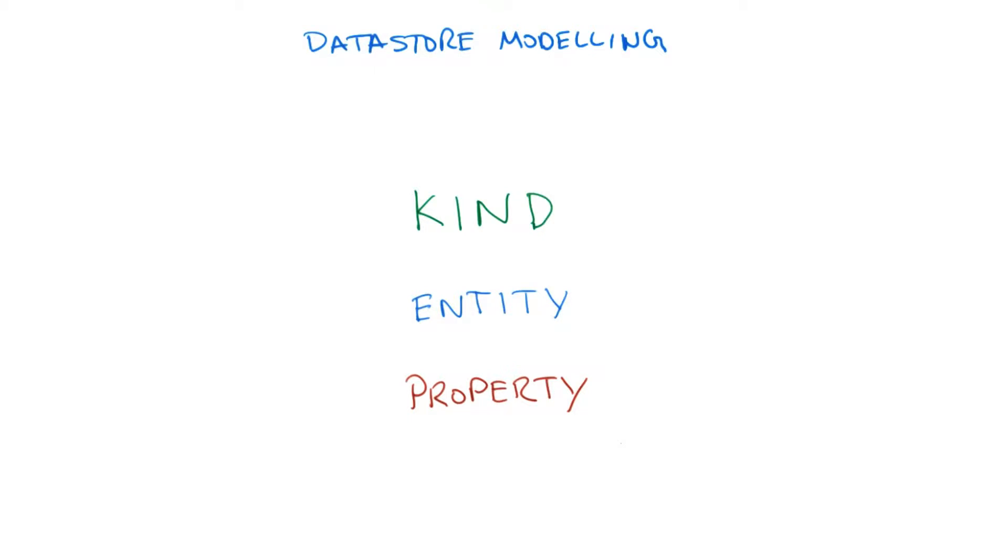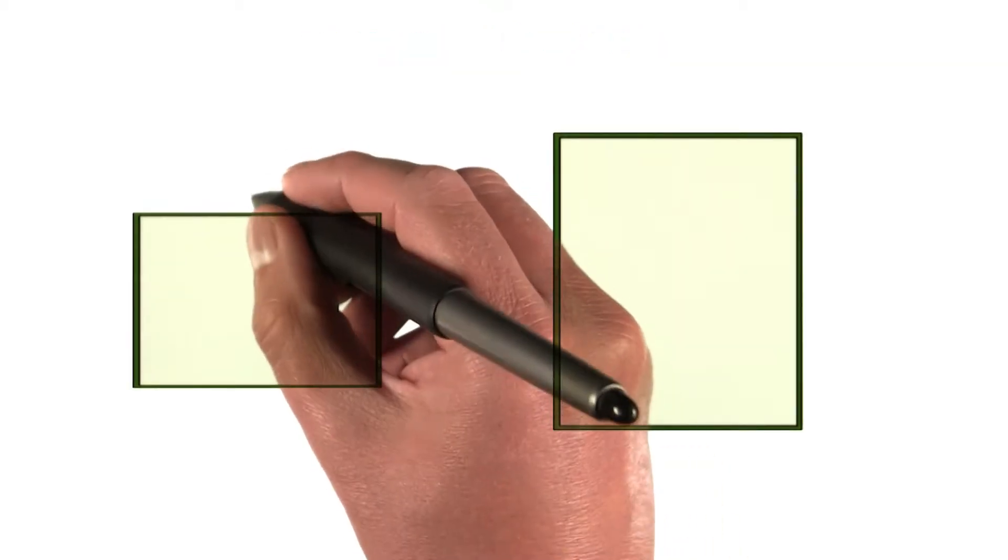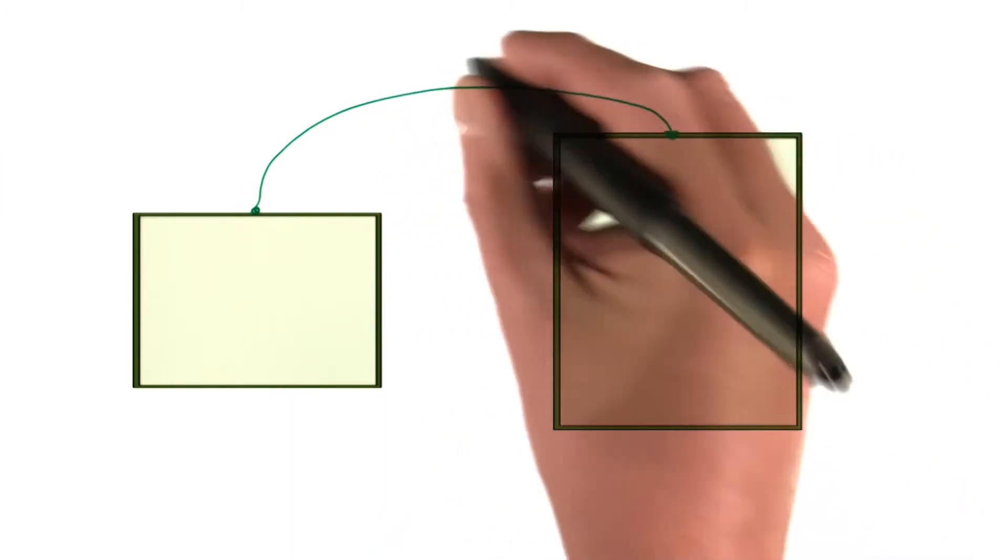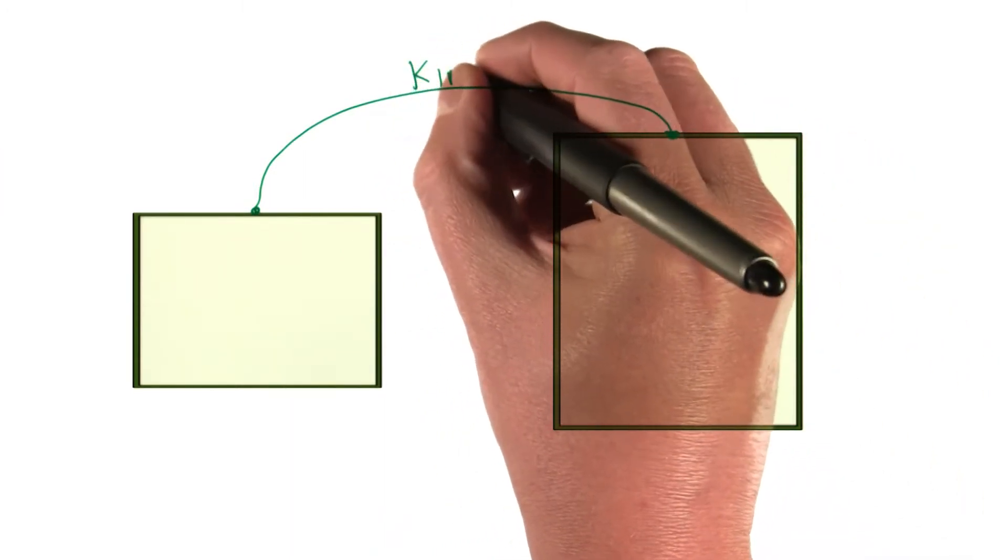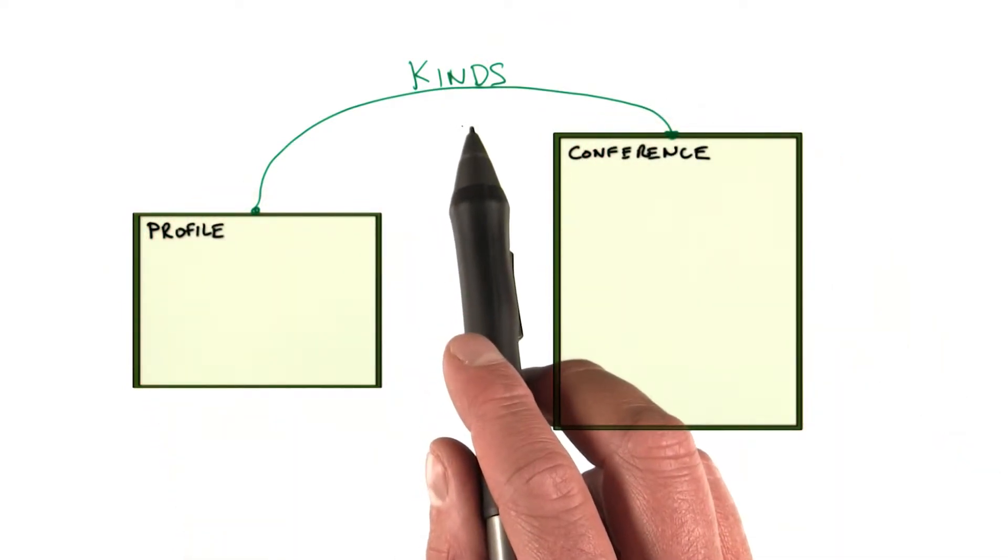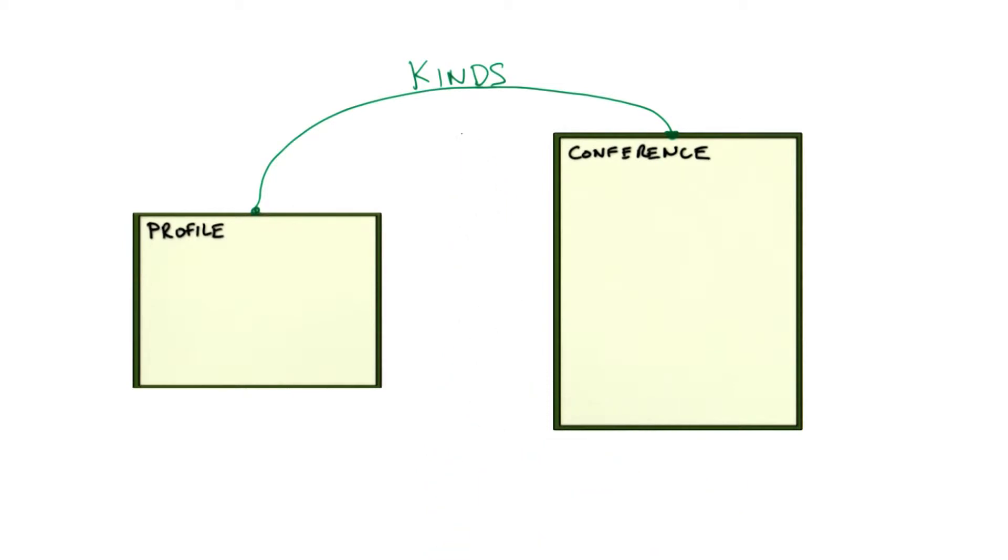Let's start with kind, shall we? A kind is a name that defines a particular structure. For our conference central application, two different kinds are for example, profile and conference. A kind is similar to the concept of classes in object oriented programming.